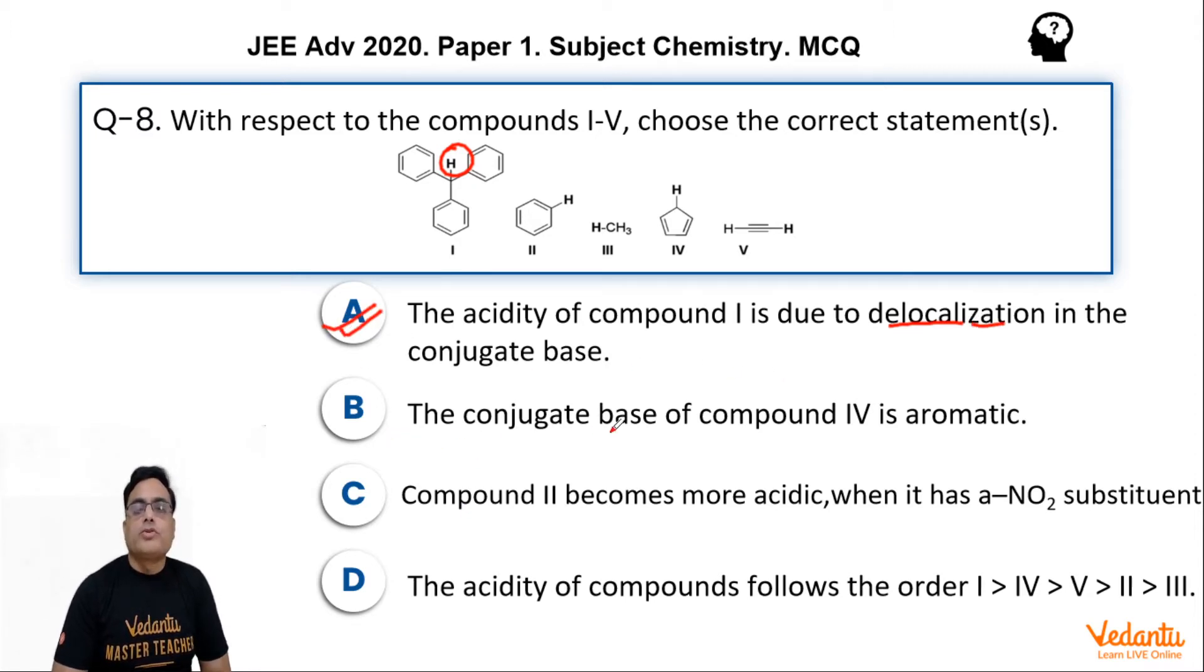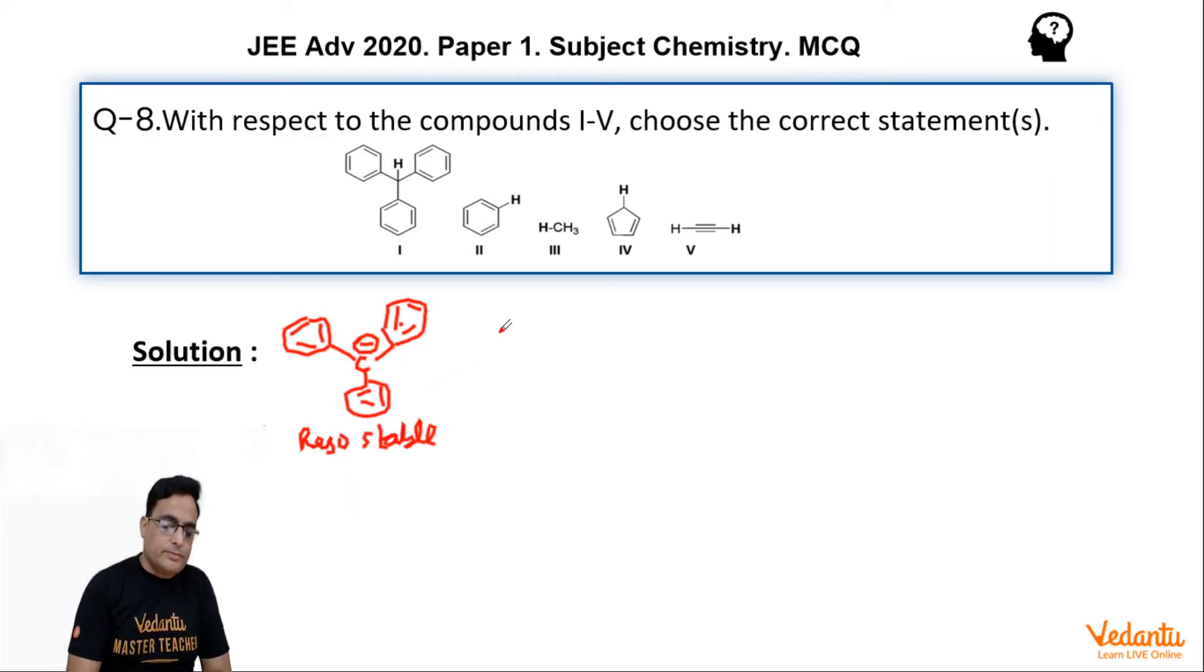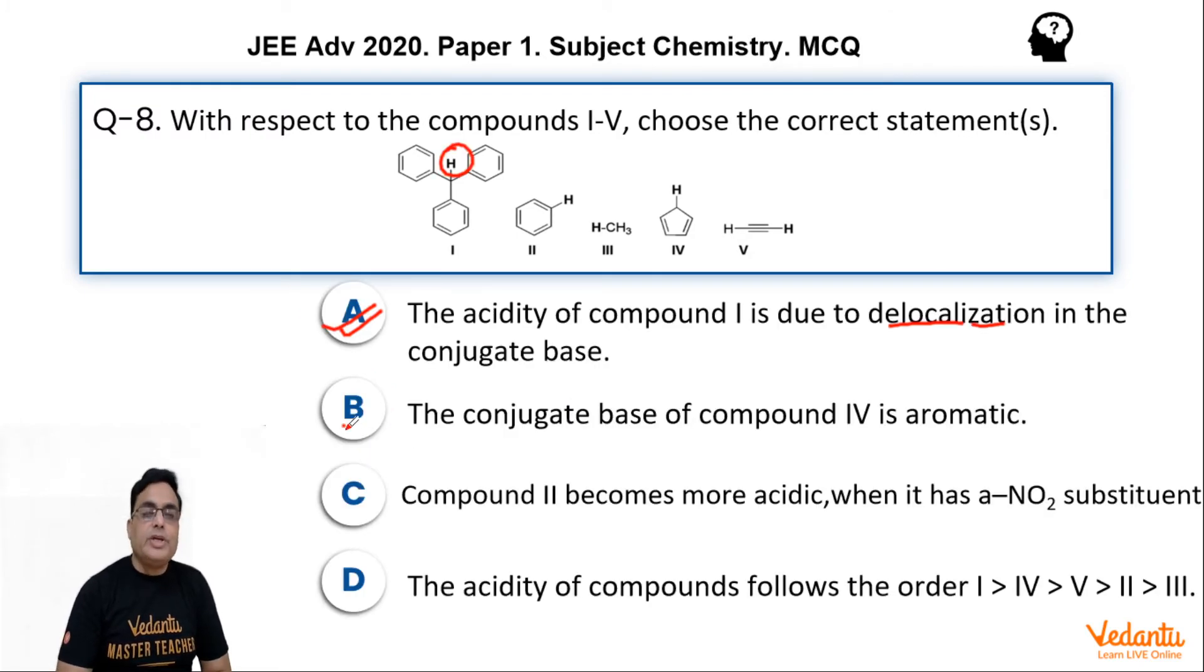Statement B: the conjugate base of compound 4 is aromatic. Let us check. Compound 4 is cyclopentadiene, and conjugate base of compound 4 is cyclopentadienyl anion. This cyclopentadienyl anion follows all three conditions of aromaticity, total 6 pi electrons, so it is aromatic. That is correct. That means statement B is correct.